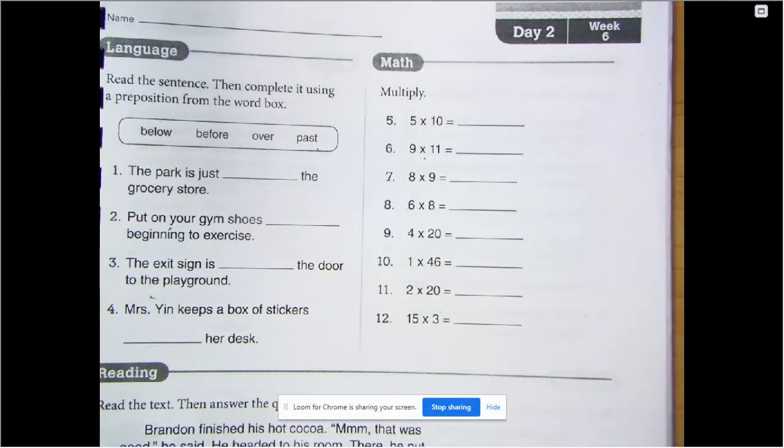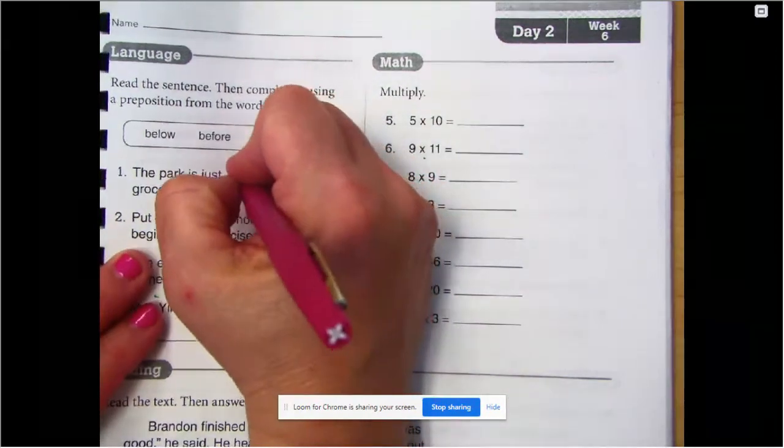So we're going to put these prepositions from this word box into these sentences. Let's try the first one. The park is just below the grocery store, before the grocery store, over the grocery store, or past the grocery store. Usually we'll say it's just past the grocery store. So we'll put in past.